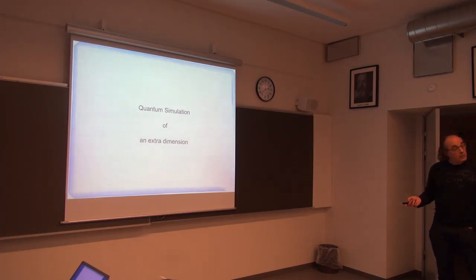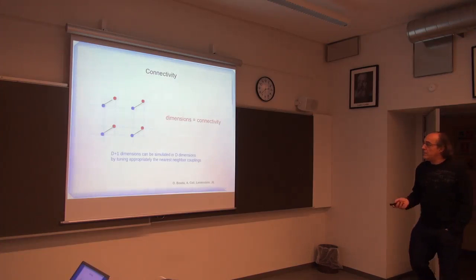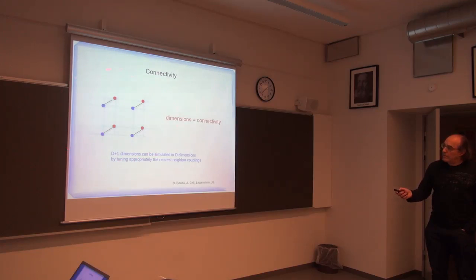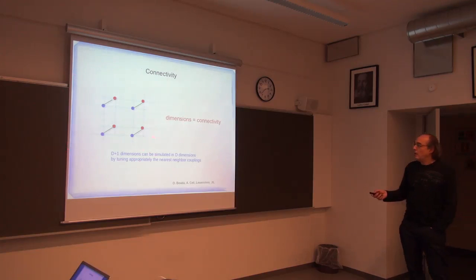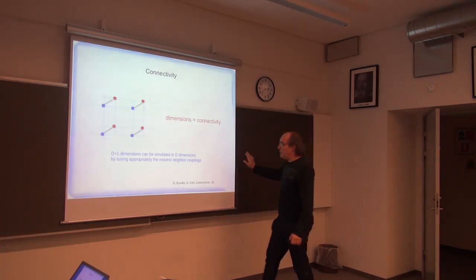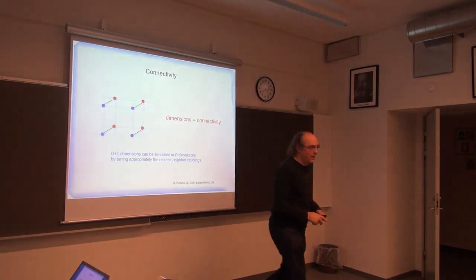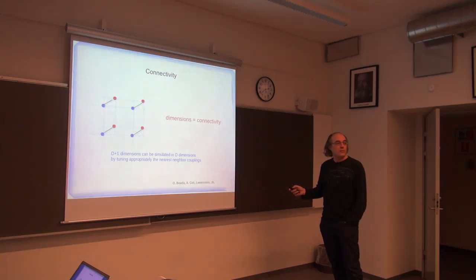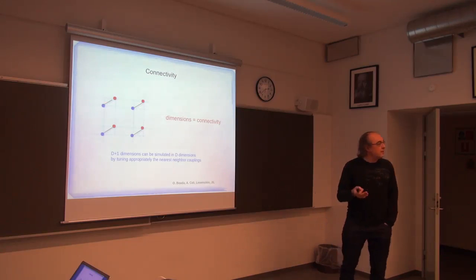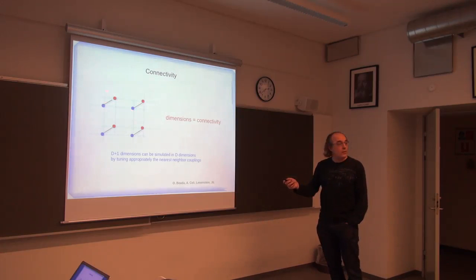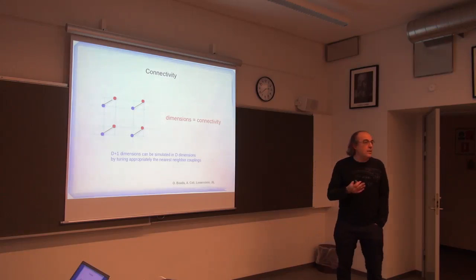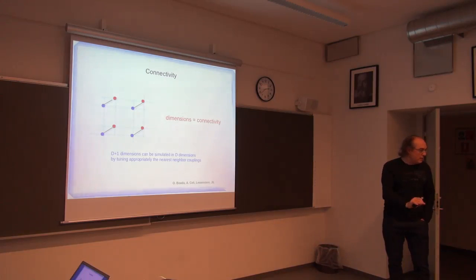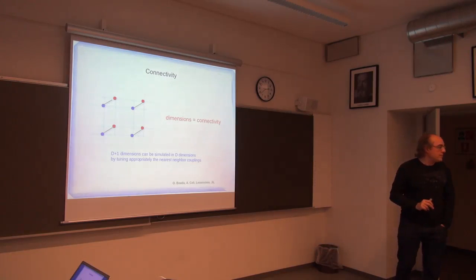The second idea was: why not an extra dimension? It's very simple. Here you can see what looks like a cube — but you understand it is not a cube; it's two dimensions. Why do we see it as a cube? Because our eyes think that jumping from blue to blue is identical to jumping from blue to red. So it's about connectivity. Dimensions are nothing but connectivity. If I engineer connectivity, I'm engineering dimensions.